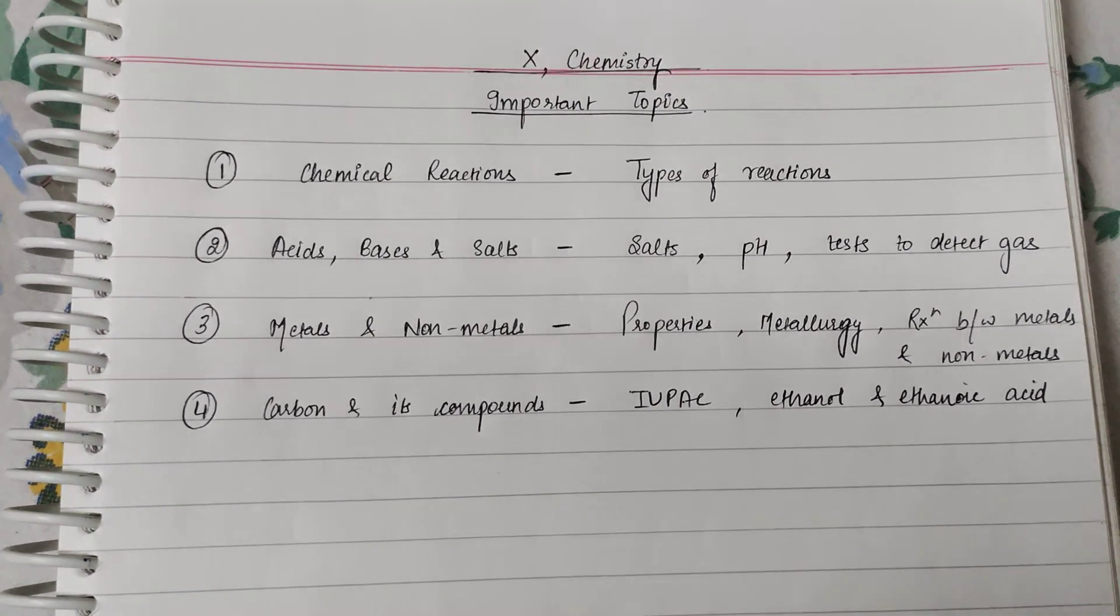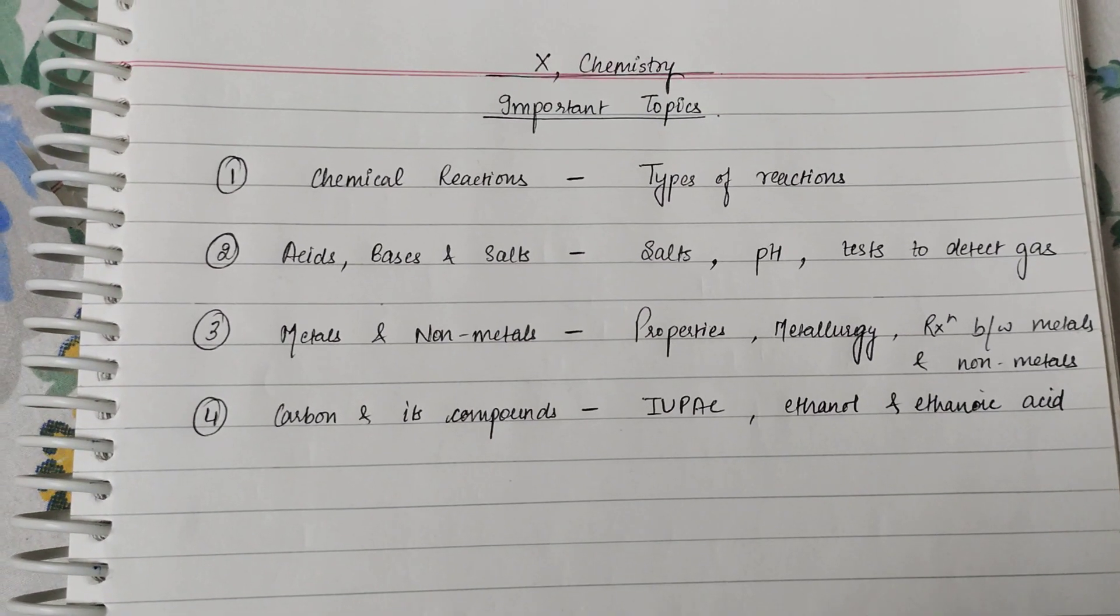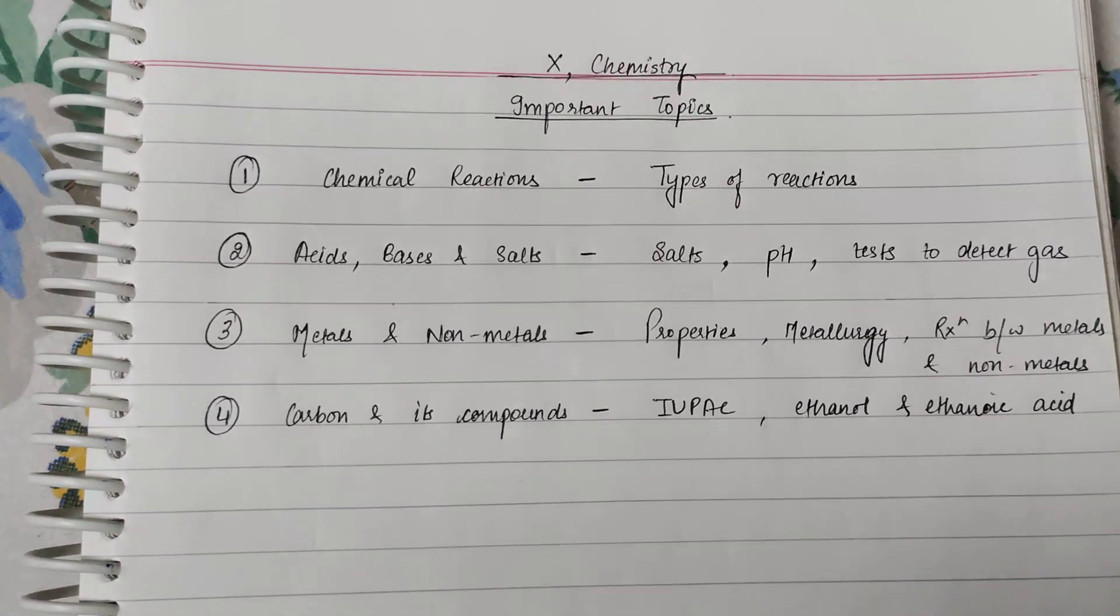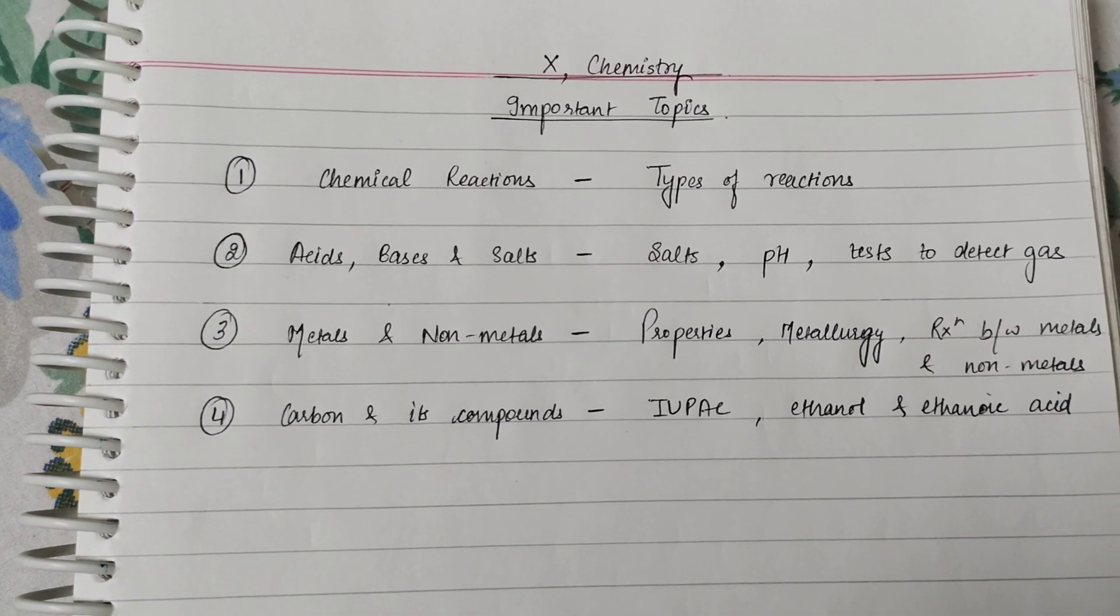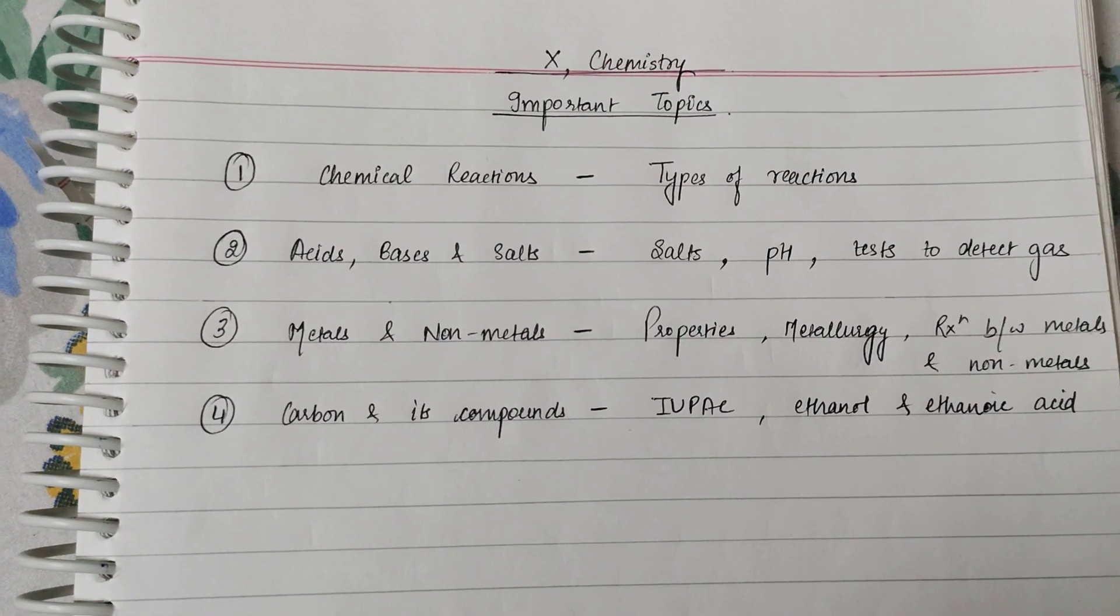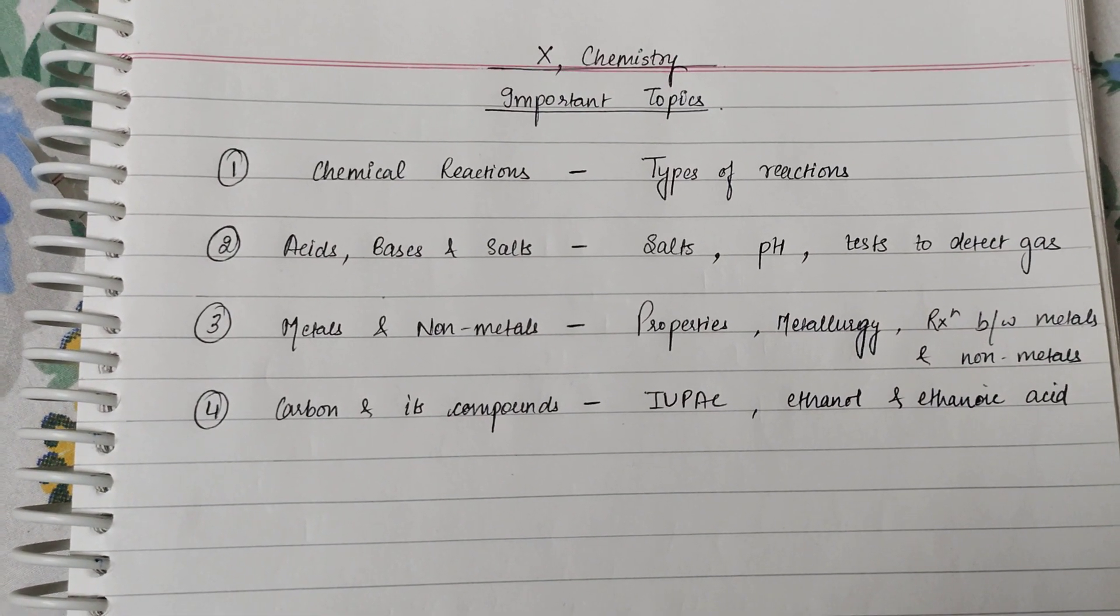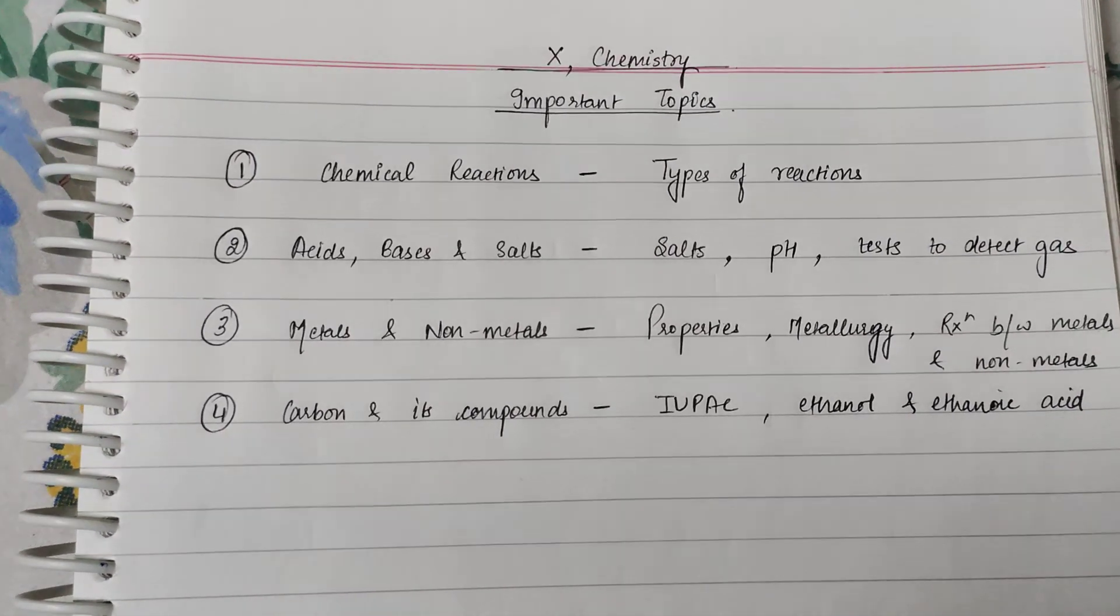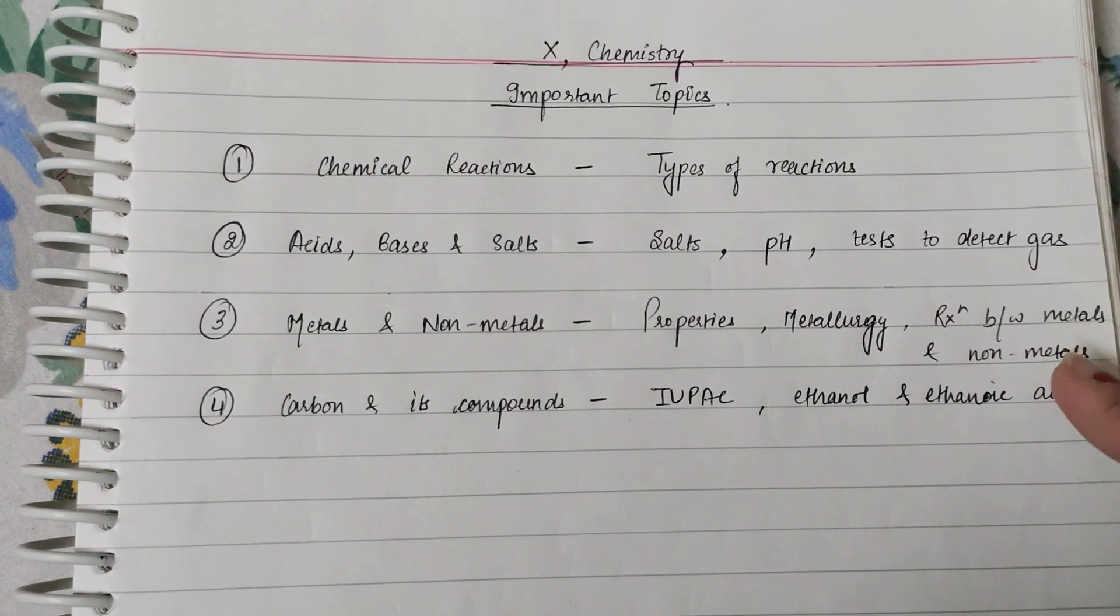pH is a very small topic. You should know what pH is for acidic, what pH is for basic, what range is for acids. This will be a simple topic that you will understand properly. Then, tests to detect gases, for example, hydrogen gas, carbon dioxide gas, what reactions are there. You will have to do it well.